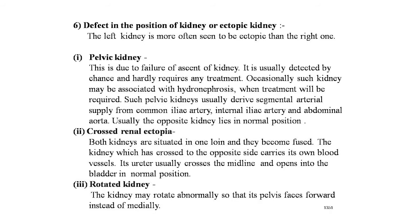Another positional defect is cross renal ectopia, where both kidneys are situated in one loin and become fused. The kidney that has crossed carries its own blood vessels, and its ureter crosses the midline to open into the bladder in normal position. The third positional defect is the rotated kidney, where the kidney may rotate abnormally so that its pelvis faces forward instead of medially.